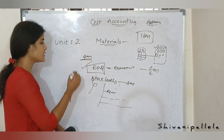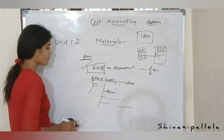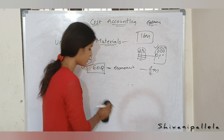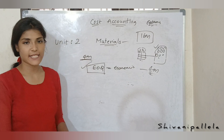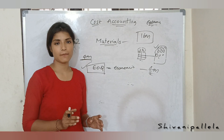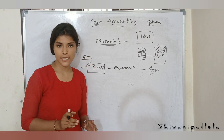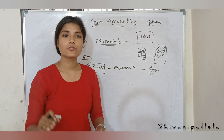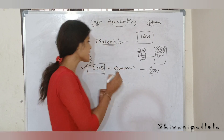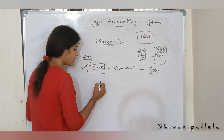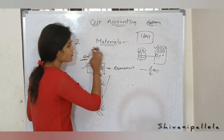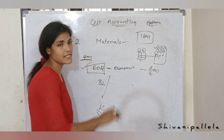For theory, I will explain the theoretical questions you can get from unit number 2 of cost accounting in the explanation videos. Especially, you can score 16 marks from this unit. The passing marks are 32. So half of the marks you can score from materials alone.